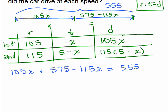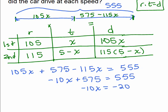Okay, so on the left-hand side, I have 105 minus 115. That's going to be negative 10x. And then I have to subtract 575 from both sides. So that's going to be negative 20. And now when you divide by negative 10, you get x equals 2.